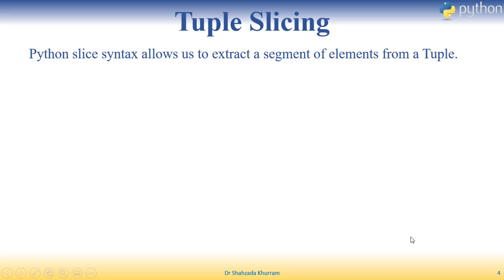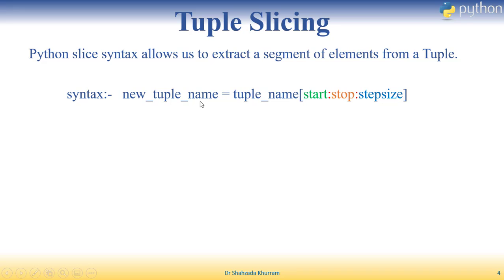Next is tuple slicing. Python slice syntax allows us to extract a segment of elements from a tuple. The syntax is: new_tuple_name = tuple_name[start : stop : step]. You give a starting position, then a colon, then a stopping position, then a colon, then the step size. The step size is optional. Then close the square brackets. The stopping point is always n-1.